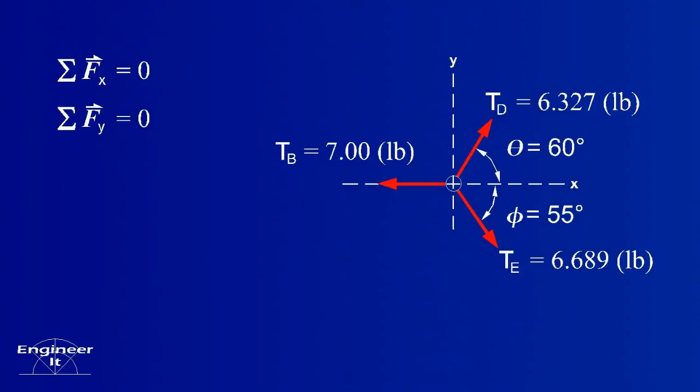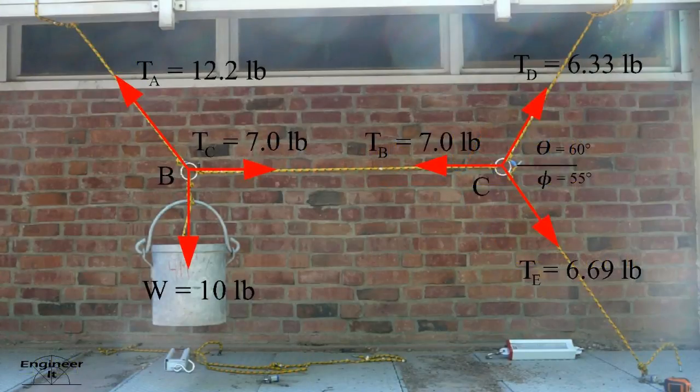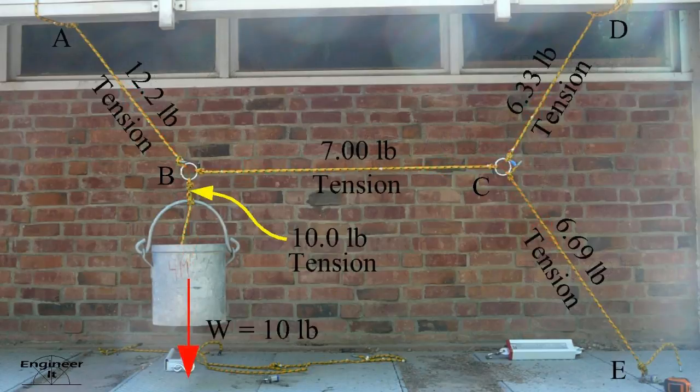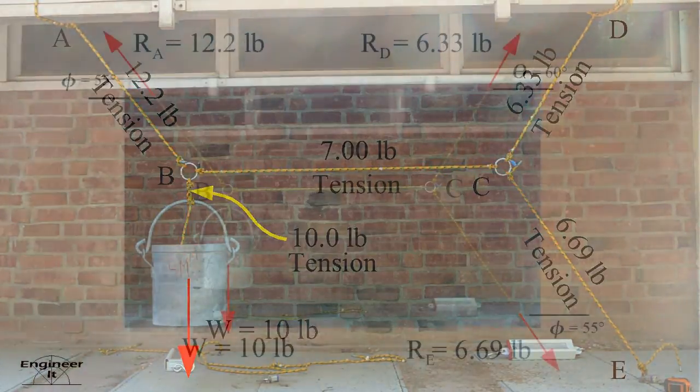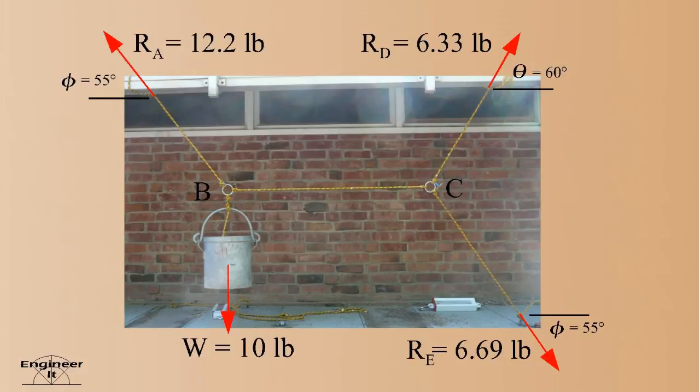These are the forces pointing on the rings by the tensions in the ropes. The ropes are tied to supports A, D, and E, which hold the 10 pound bucket in equilibrium.